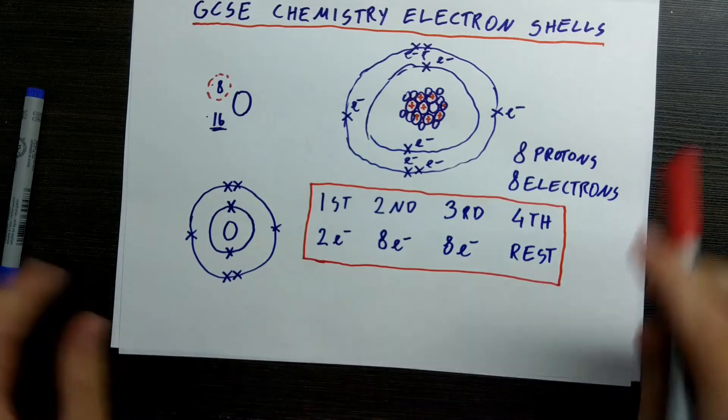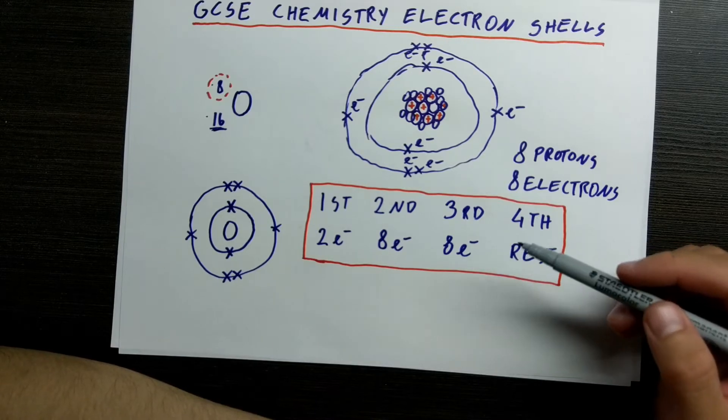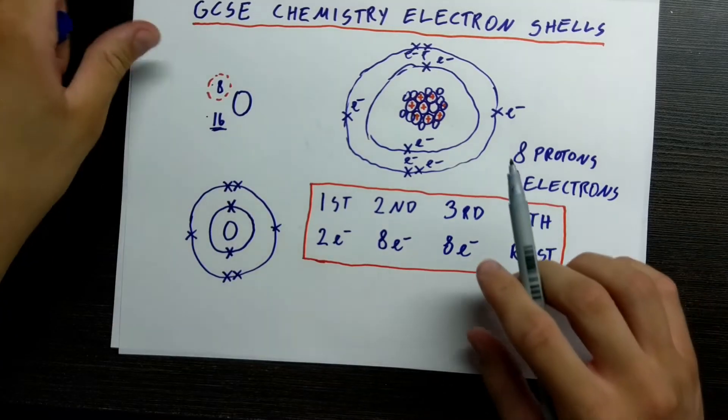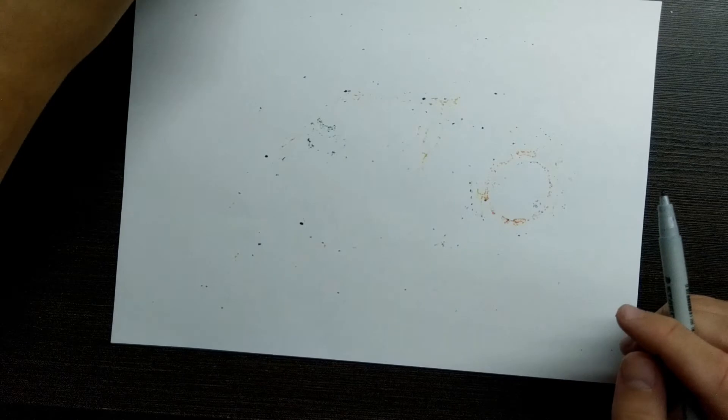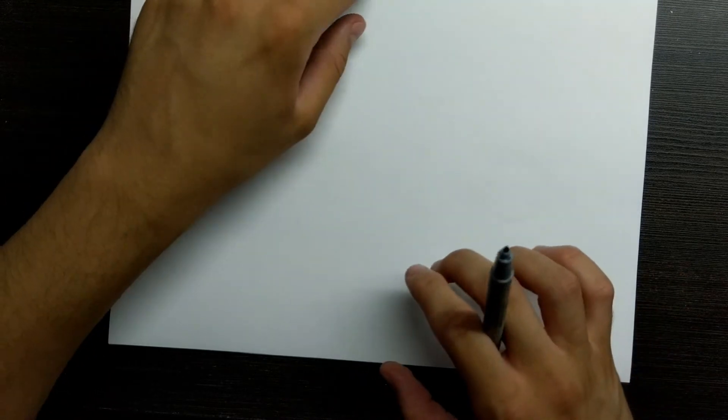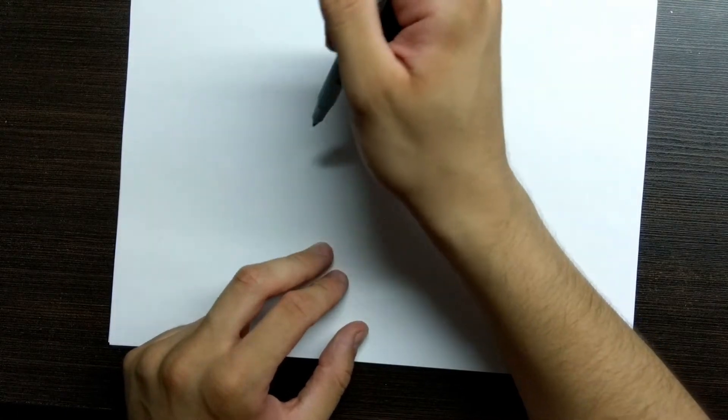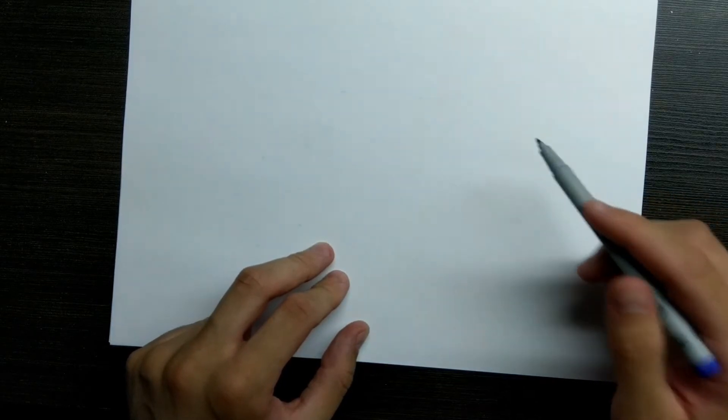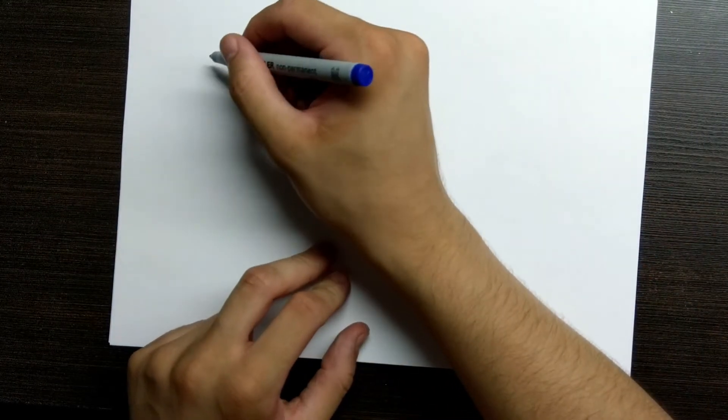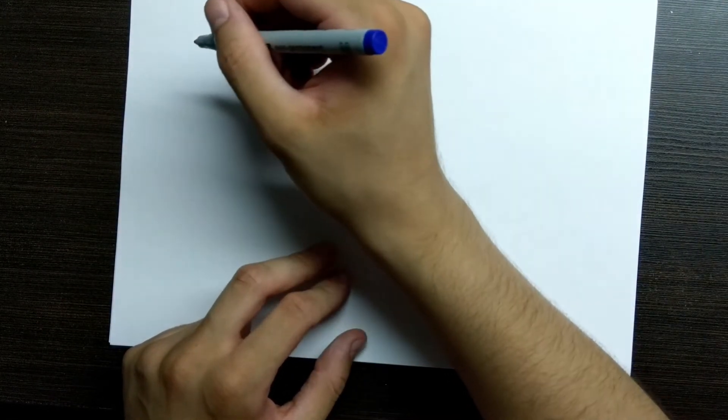Now we know how to fill up these shells. Let's look at another example. Let's look at another more complex example. Let's look at calcium. The first thing, if we wanted to draw an electron shell for calcium, we would have to first go to periodic table. We would look at the calcium in periodic table.